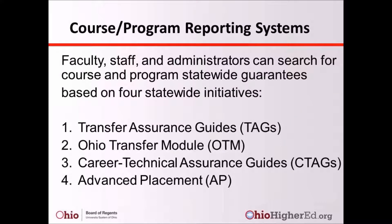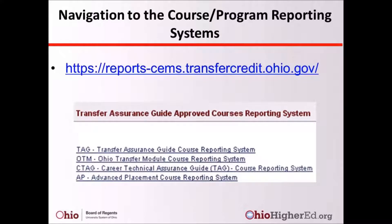There are four course or program reporting systems based on the current statewide guarantee initiatives through which educators can navigate. Those include Transfer Assurance Guides (TAGs), the Ohio Transfer Module (OTM), Career Technical Assurance Guides (CTAGs), and Advanced Placement (AP) Exams. To navigate to the system, go to reports-cems.transfercredit.ohio.gov.